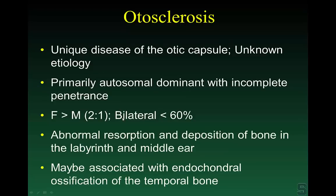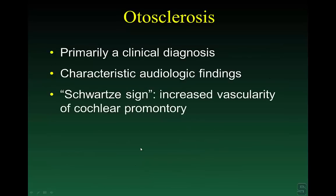No one is quite sure what causes otosclerosis. There is some genetic predisposition — primarily autosomal dominant — it's more common in females than males, and is bilateral in up to 60% of cases. It's felt to be due to abnormal resorption and deposition of bone in the middle ear. Otosclerosis is still a clinical diagnosis, though radiologically we see deposits. Shatnik's book described otosclerosis in 10% of the asymptomatic population.